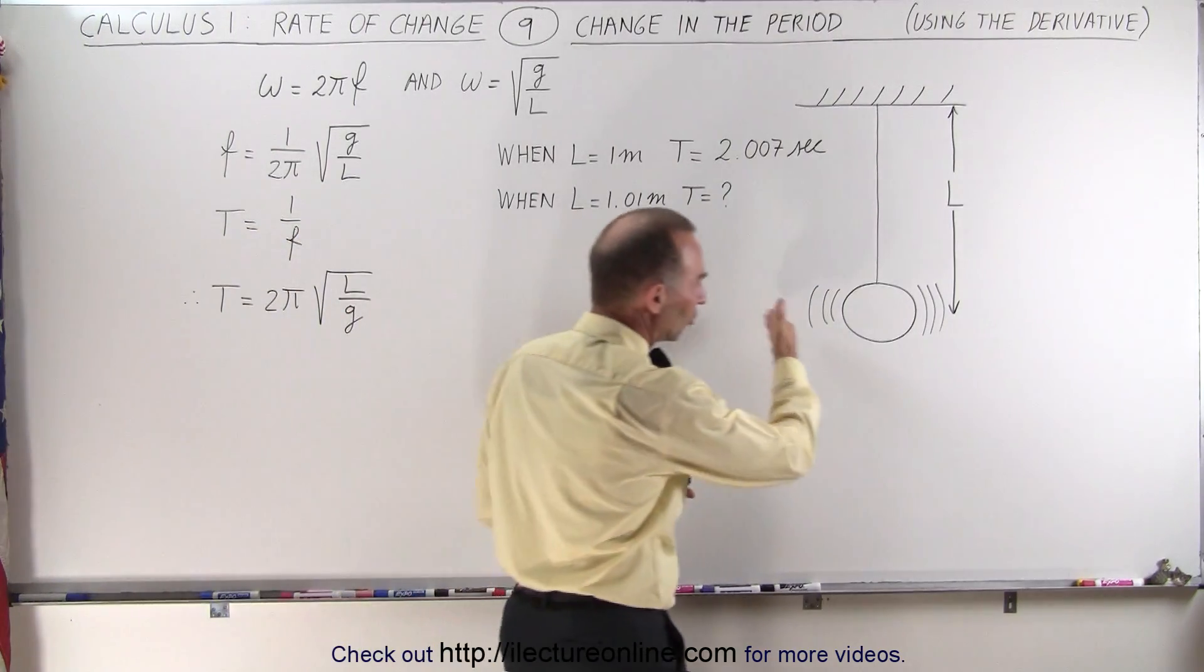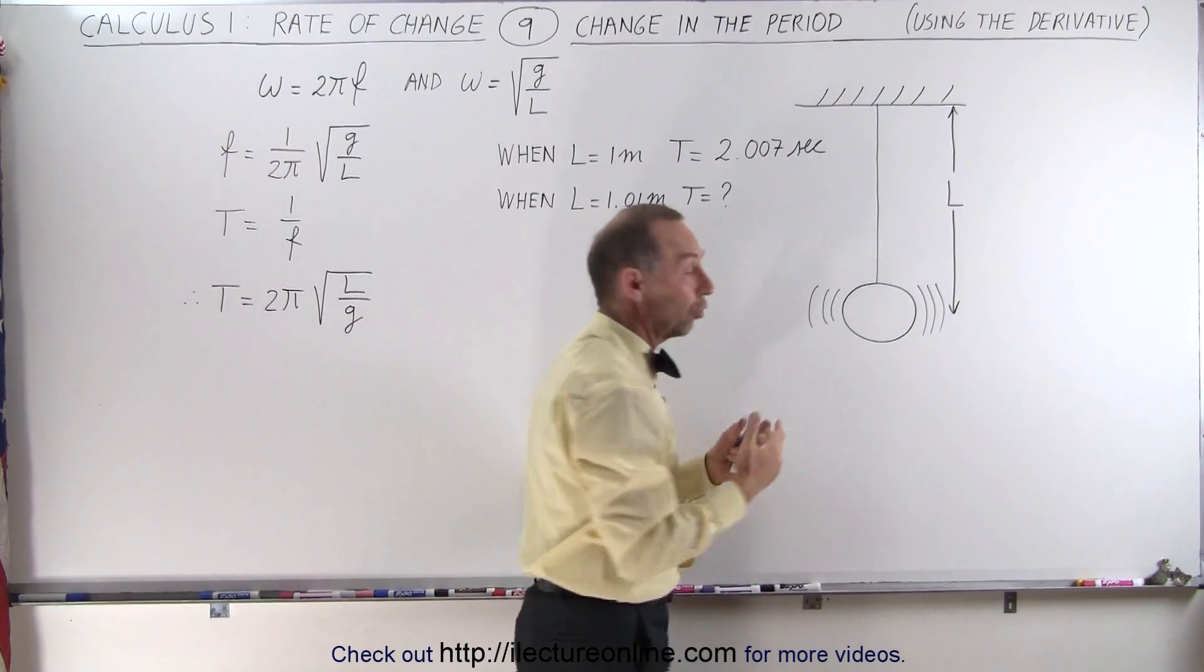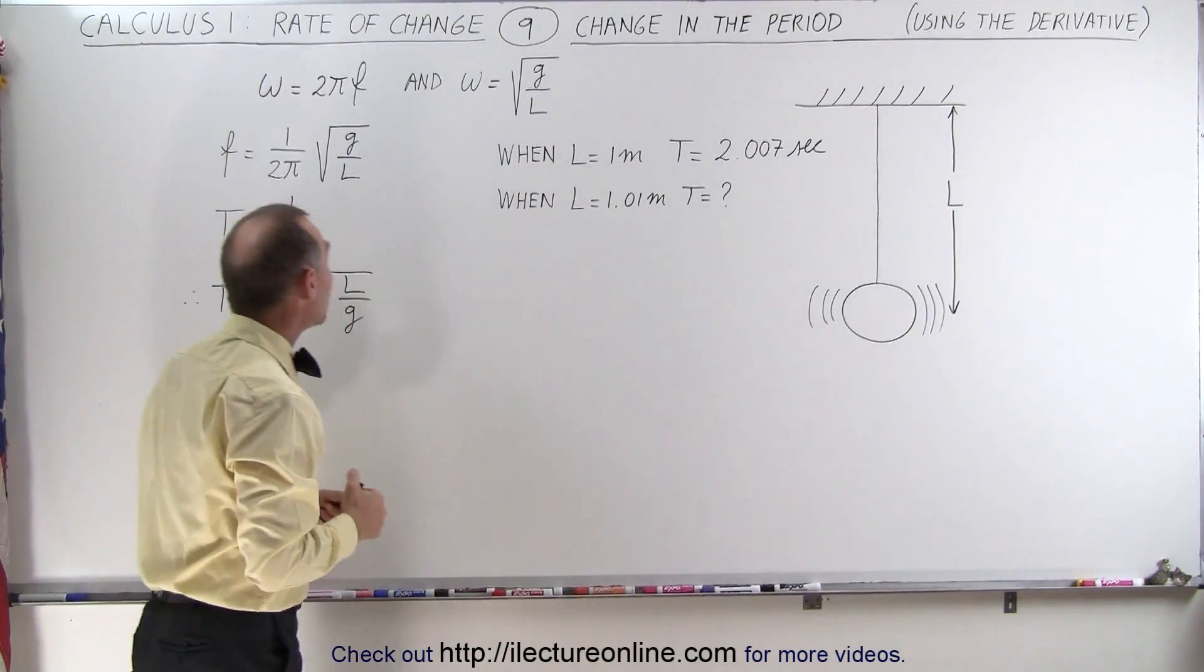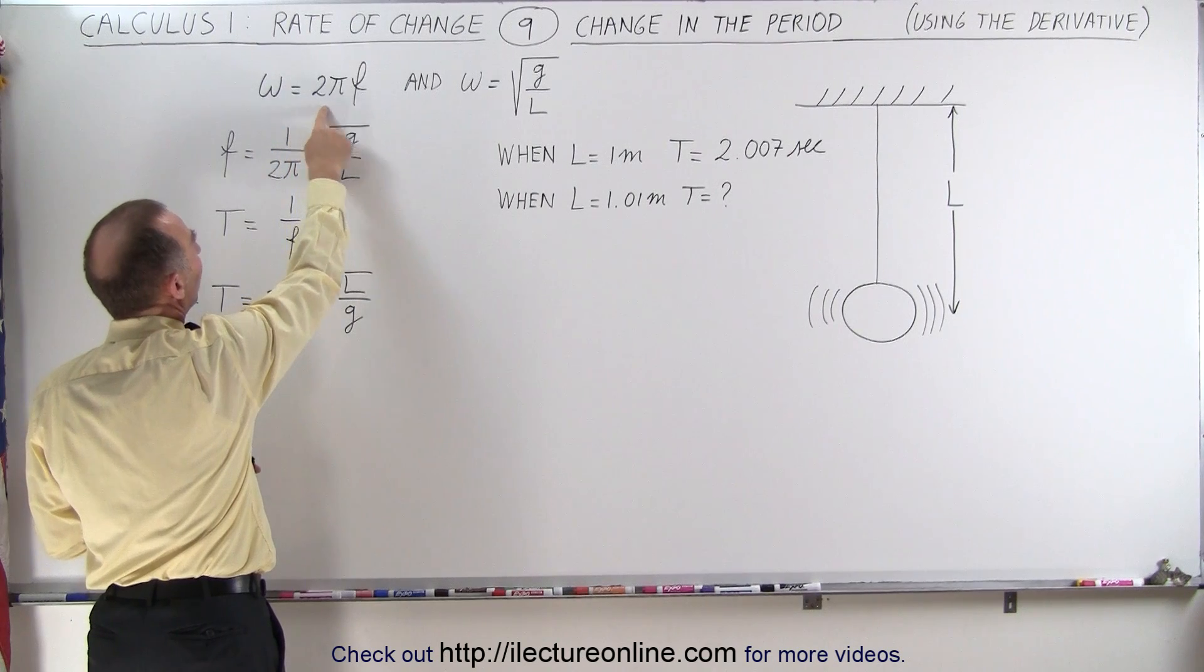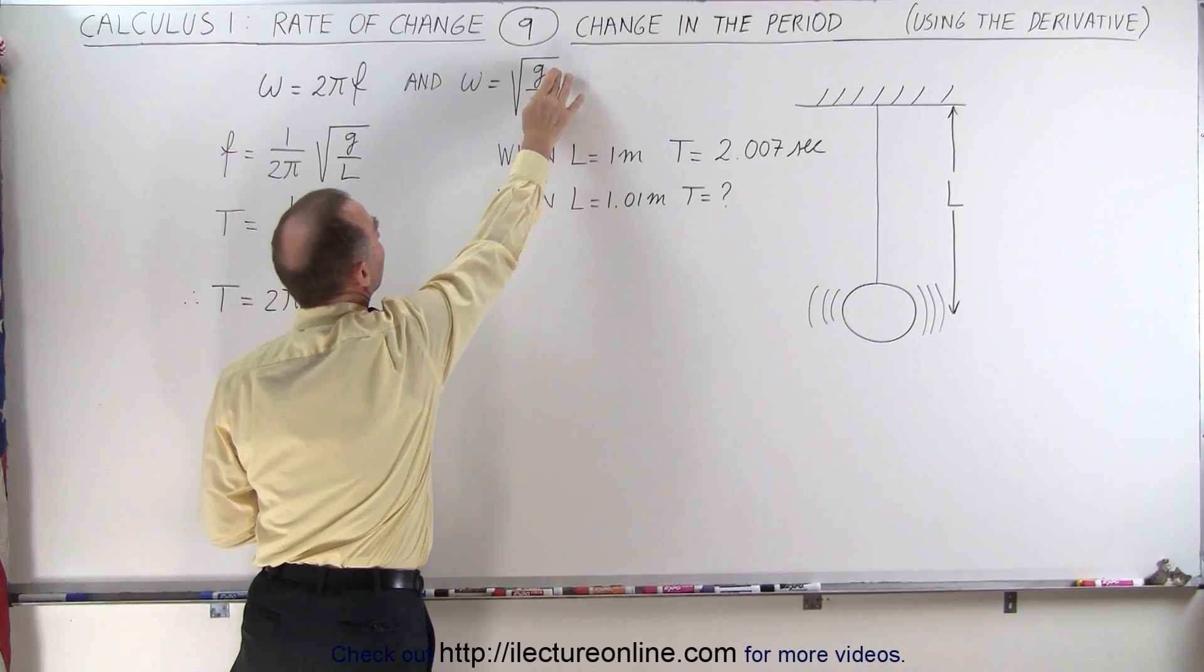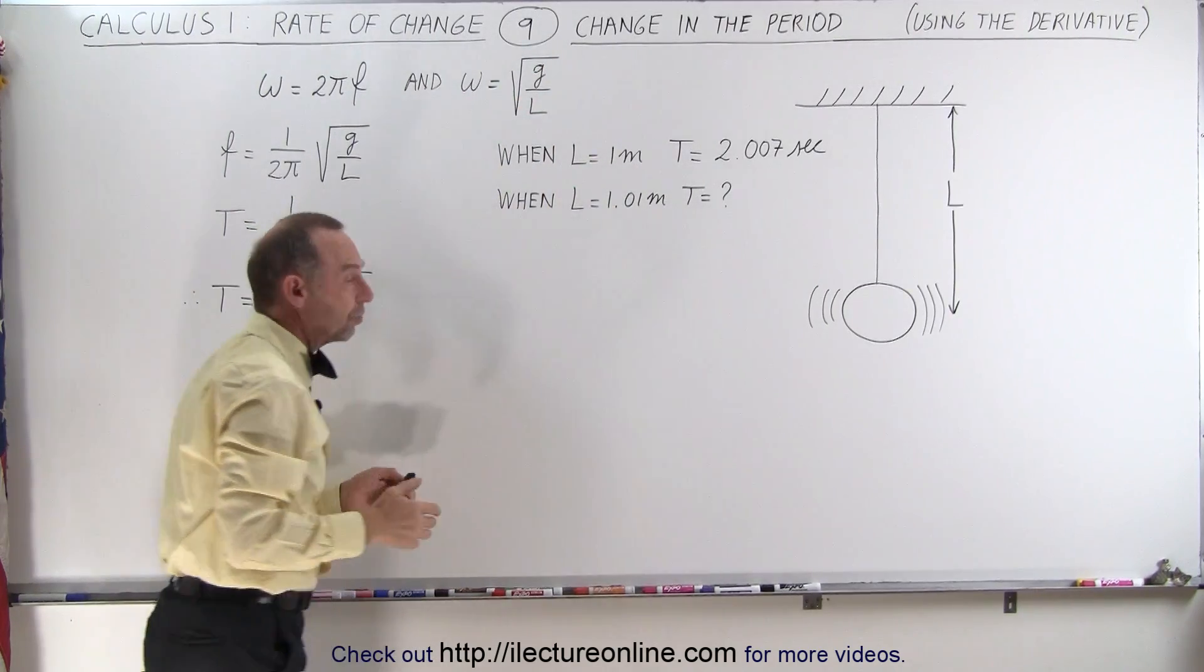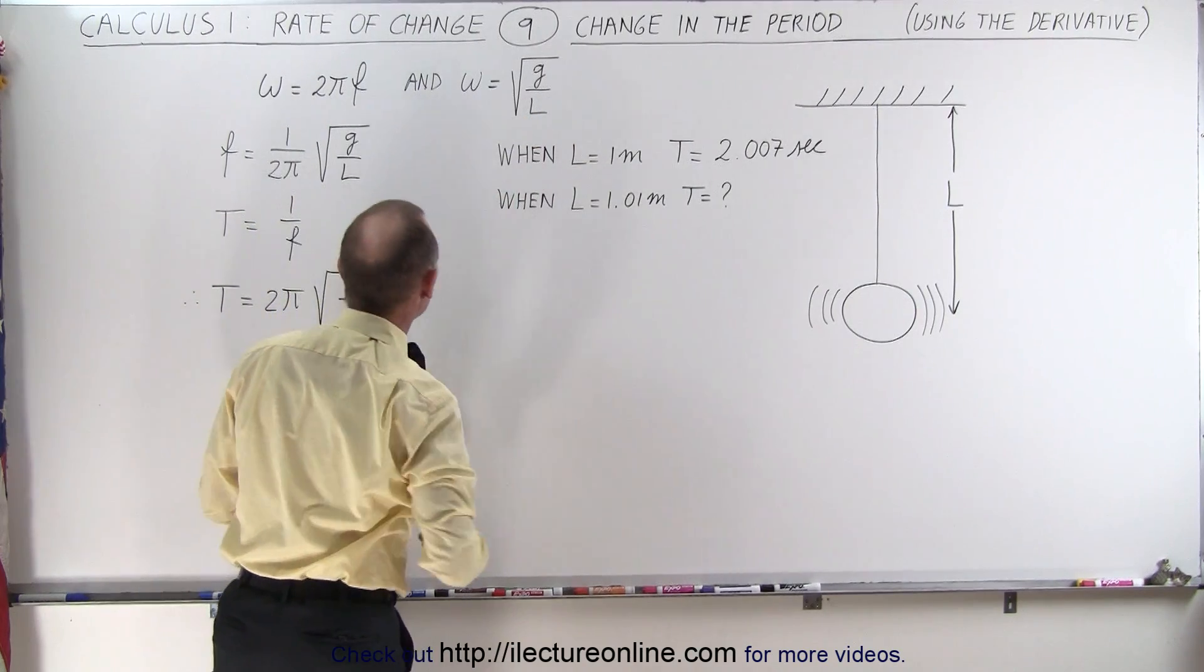So here we have a pendulum which is oscillating back and forth. It has some original length L and an associated period. We know that the angular frequency of oscillation is going to be equal to 2πf, and the angular frequency of a pendulum is equal to the square root of the gravitational constant, or I should say the acceleration due to gravity divided by the length of the pendulum.